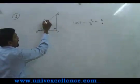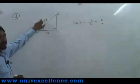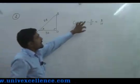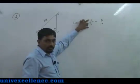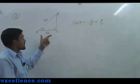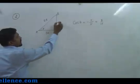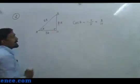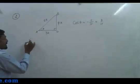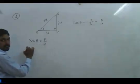Then hypotenuse will be 5k. We put 3k and 5k because these are the lengths, whereas these are the ratios. In the ratio we never write k; since it is length, we always write k. So using Pythagoras theorem we get OB as 4k.